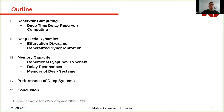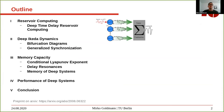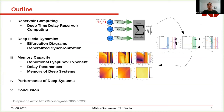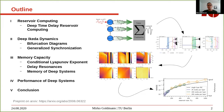As a short outline, I'm going to start by introducing the reservoir computing scheme and give a short introduction of the deep time delay reservoir computing we use. Then we will look at bifurcation diagrams of such systems. I'm going to talk about generalized synchronization between the layers, then memory capacity, comparing them to the conditional Lyapunov exponent and showing delay resonances. Finally, I'll show these systems have really good performance at prediction tasks, followed by a short conclusion.